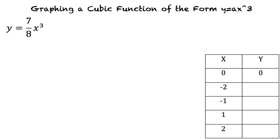Now we substitute these values into our equations. Negative 2 gives us y is equal to 7 over 8 times parentheses negative 2 parentheses to the third power, resulting in negative 7. Now we insert our other values into the equation.